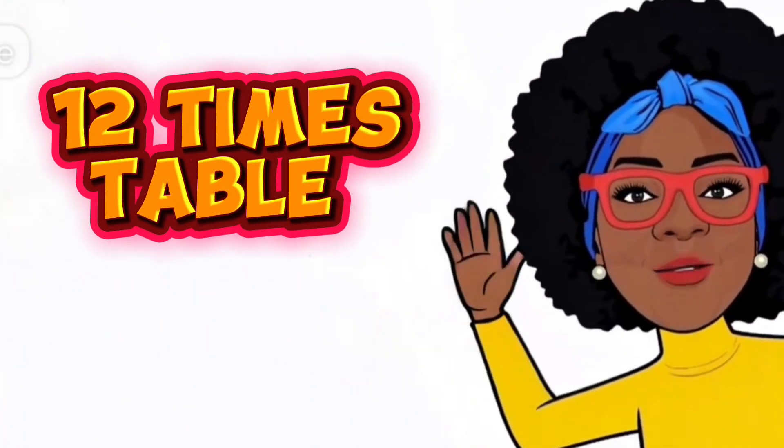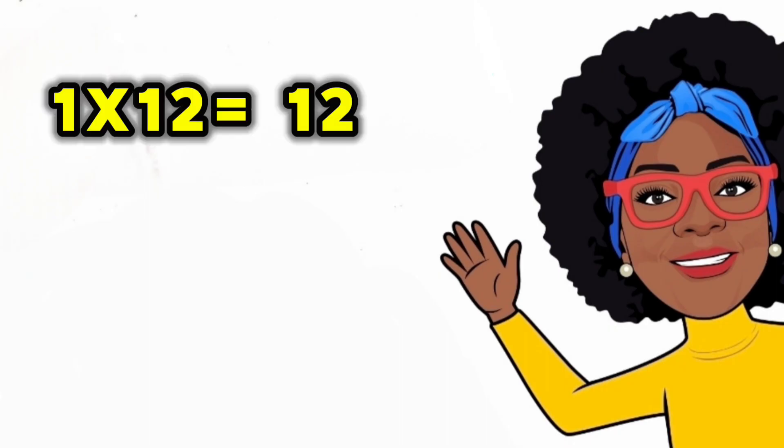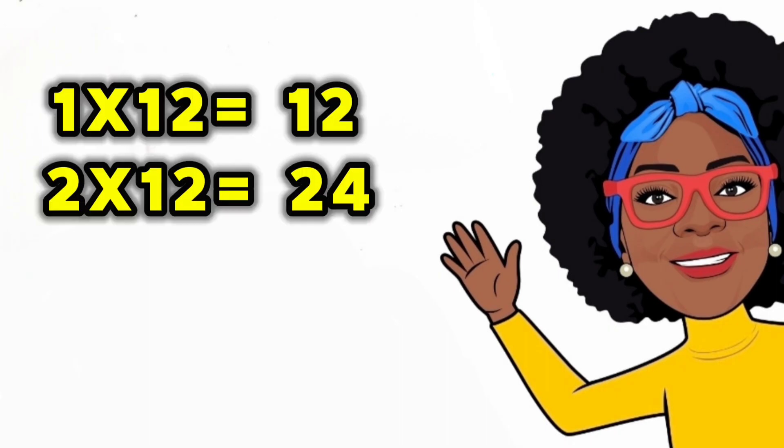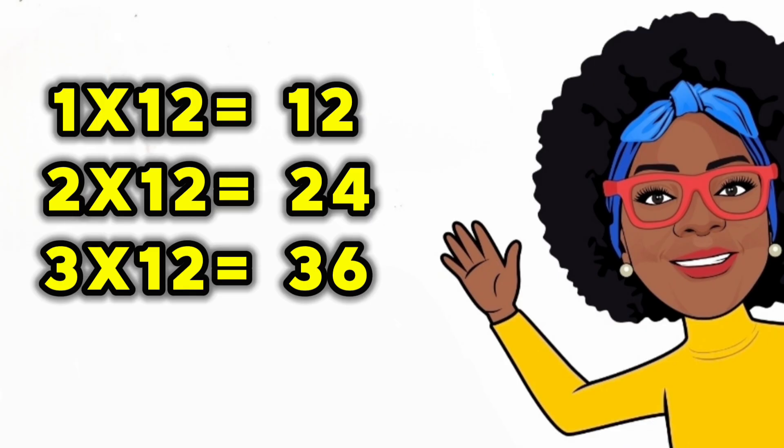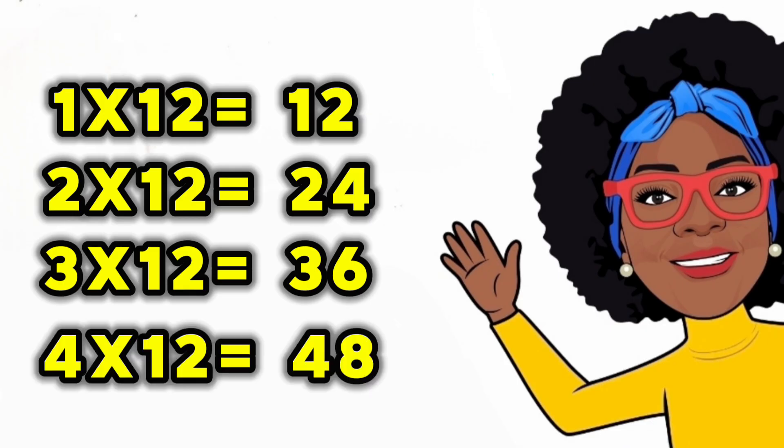12 times table: 1 x 12 is 12, 2 x 12 is 24, 3 x 12 is 36, 4 x 12 is 48.